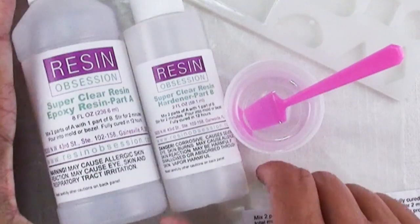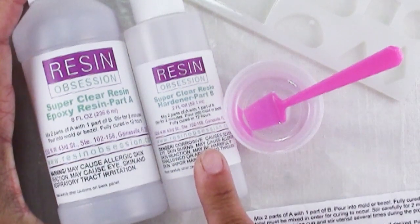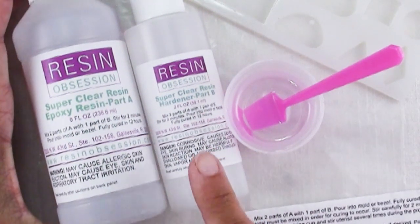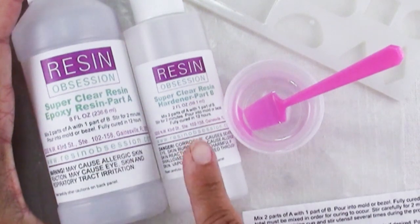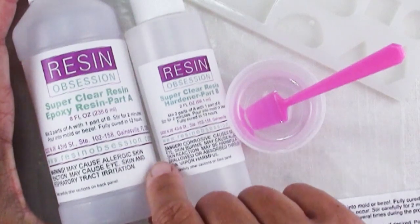For example this is an 8 ounce bottle and a 2 ounce bottle of hardener to go with it but this is 2 ounces and this is 8 ounces so obviously this is less dense so if I did it by weight the proportions wouldn't work out properly.